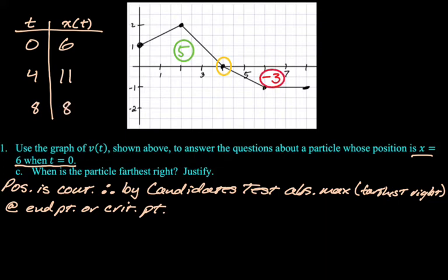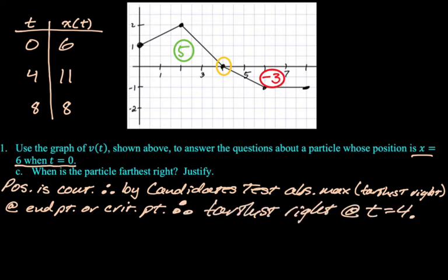And then we go 3 to the left. So we're going to subtract 3 and get 8. And then we're looking for when the particle is farthest to the right. So the particle is farthest to the right at t equals 4. So therefore, farthest to the right at t equals 4.